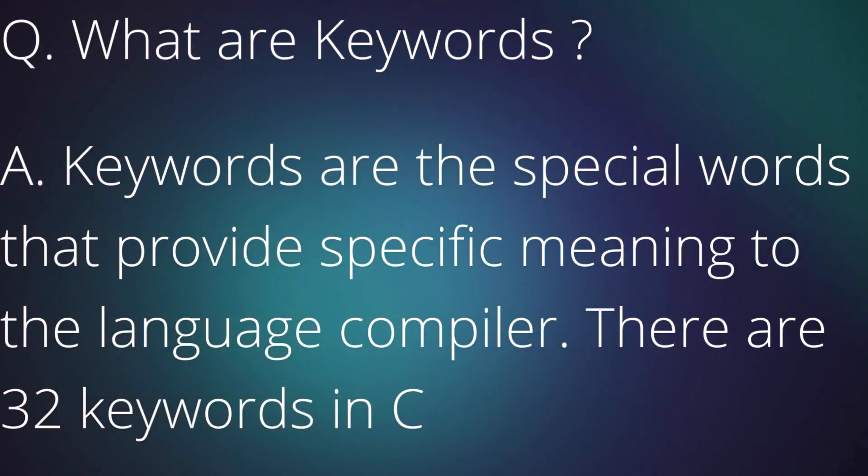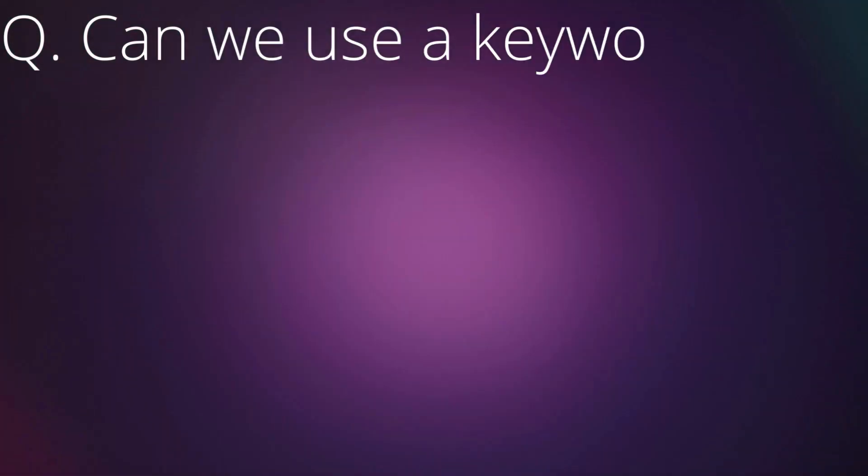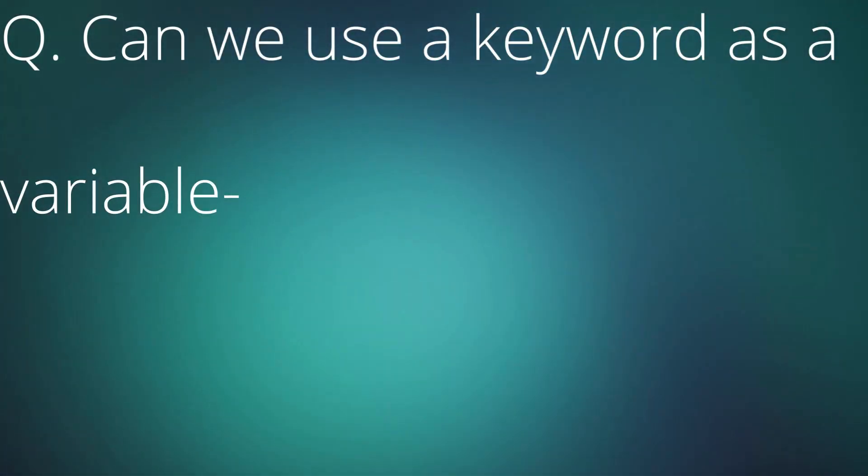There are 32 keywords in C language. Question: Can we use a keyword as a variable name? Answer: No.